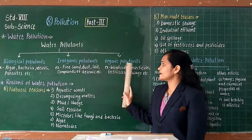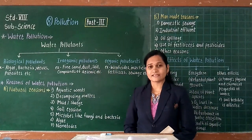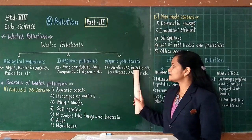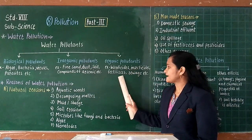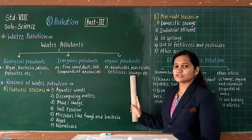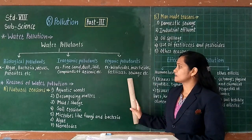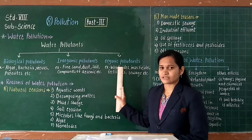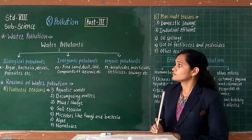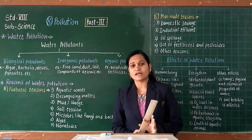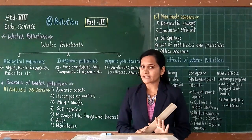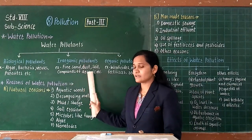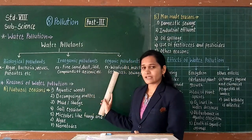The third type is organic pollutants. For example, viricides, insecticides, fertilizers, and seabed. Such types of examples are coming under organic pollutants. So as water pollutants, there are a total of three types, and below each type I have written examples — observe it carefully.